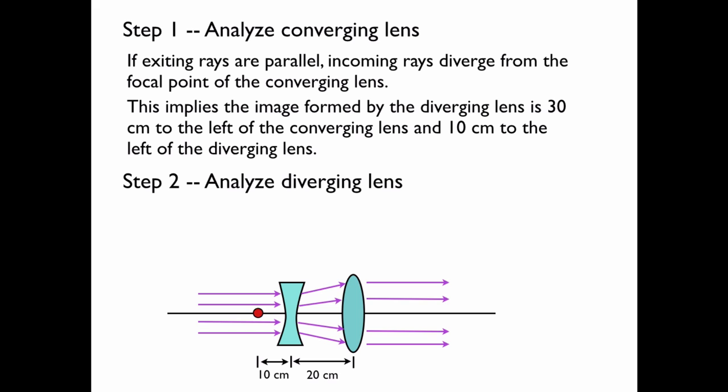Now let's analyze the diverging lens. The incoming rays are parallel and the object is located at infinity.